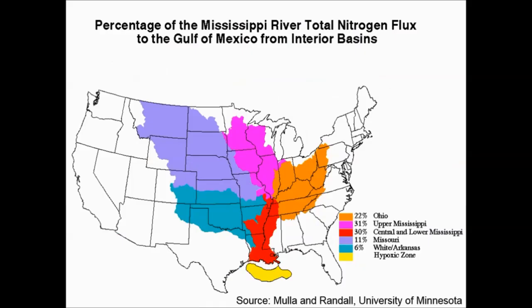One of the issues that we deal with currently in agricultural systems is this dead zone or hypoxic zone in the Gulf of Mexico. This dead zone in the Gulf is caused by excess nitrogen carried by the Mississippi River. As we can see here, a lot of agriculture in the Midwest is causing this dead zone in the Gulf — nitrogen transported through the Mississippi River causing excess nutrients in the Gulf.